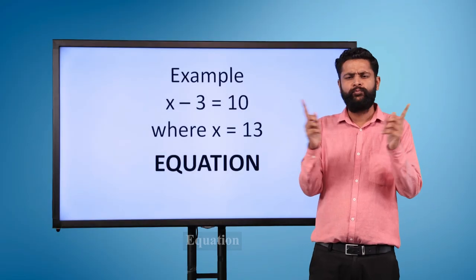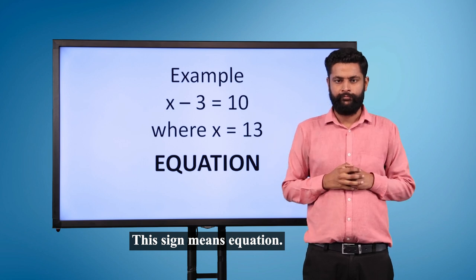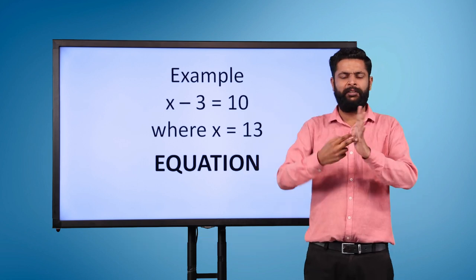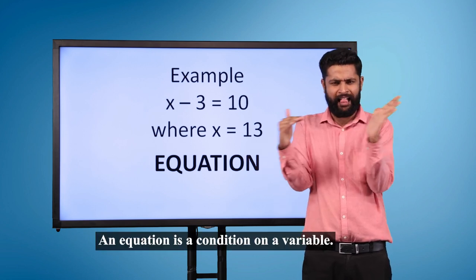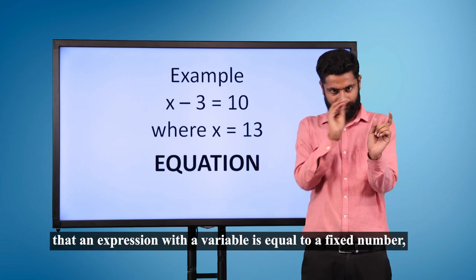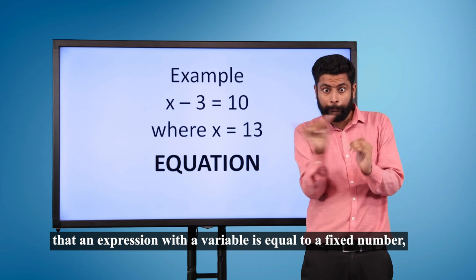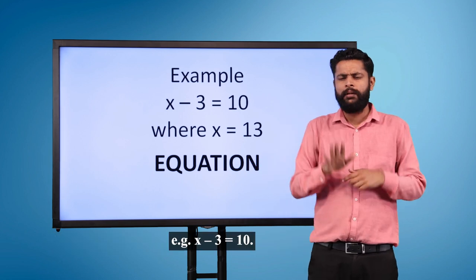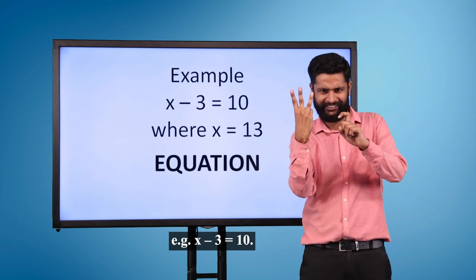Equation. This sign means equation. An equation is a condition on a variable. It is expressed by saying that an expression with a variable is equal to a fixed number. Example: x minus 3 is equal to 10.